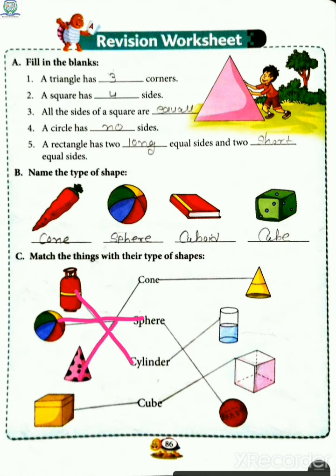Birthday cap ka cone, aur box ka cube. Usi tarike se, again ek triangle sa shape hai toh ye shape hai cone. Ye bhi ek birthday cap hi hai. Phir hai cylinder shape ka, yahaan pe aapko object diya hai, toh ye ise bhi hum cylinder se match karte hai.